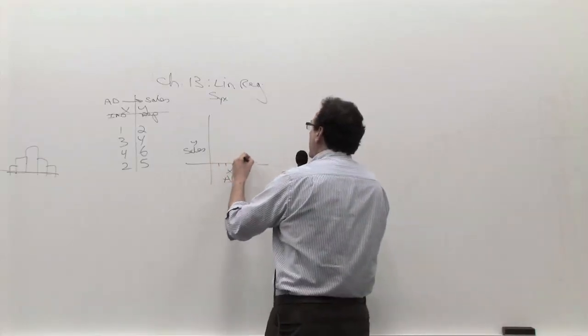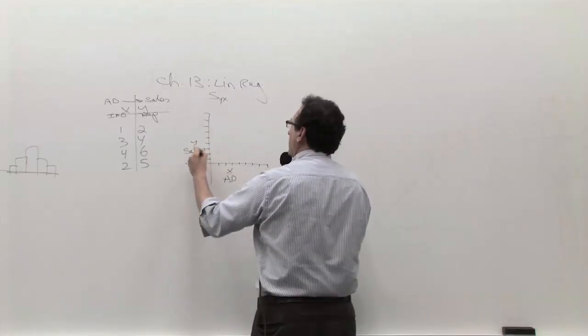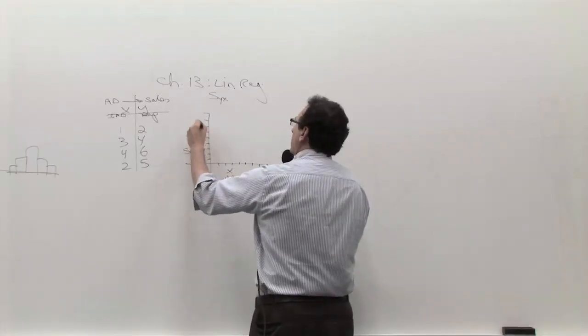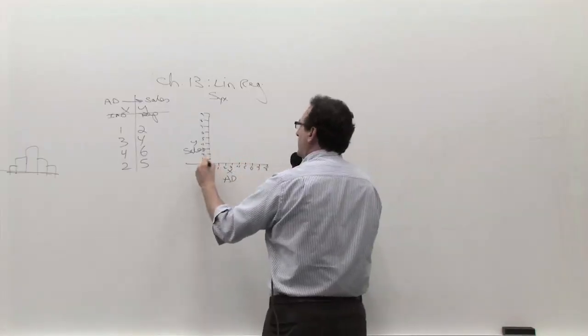If you make a little graph here, one, two, three, four, five, six, seven, eight, nine. One, two, three, four, five, six, seven, eight. This is zero, of course.